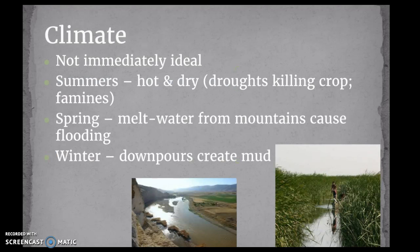In terms of the climate, Mesopotamia's climate is not immediately ideal. The summers are hot and dry, so droughts can kill crops and there can be famines. In the spring, water runs down from the mountains and causes flooding in the rivers. But the people actually find a way to control that flooding through irrigation, which is really important.